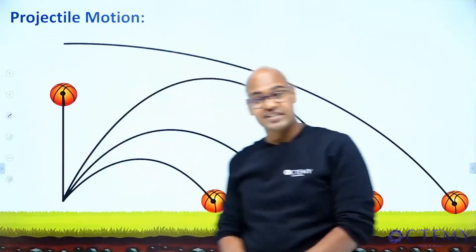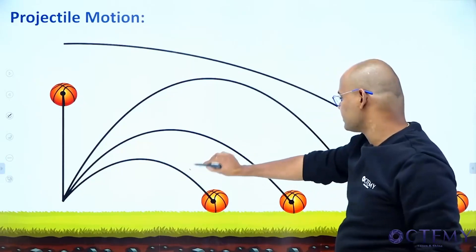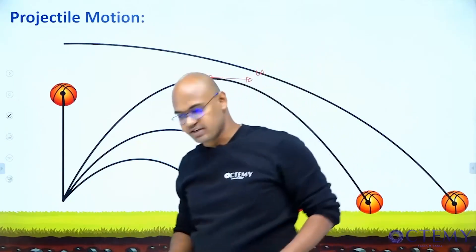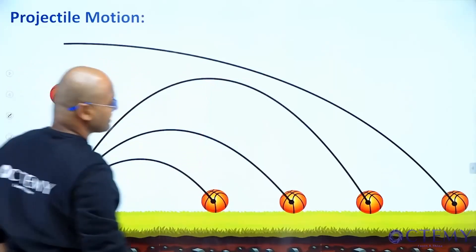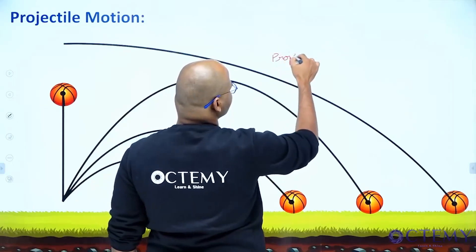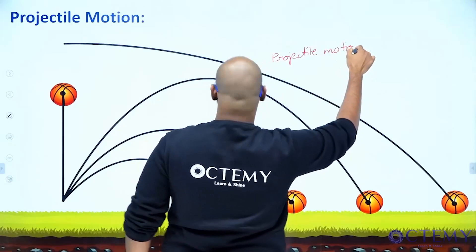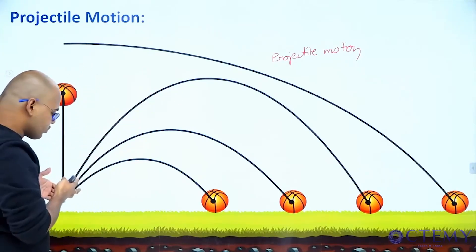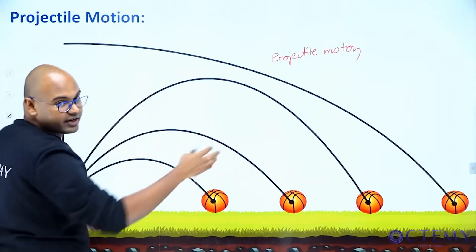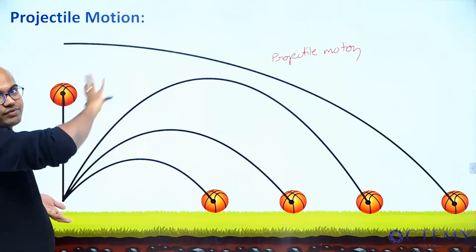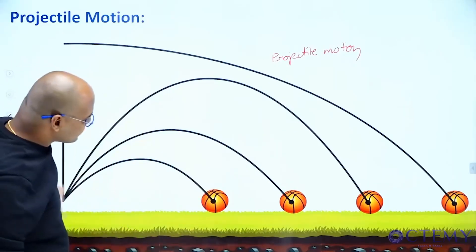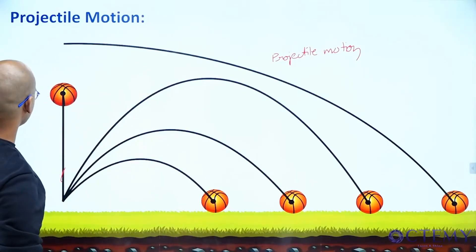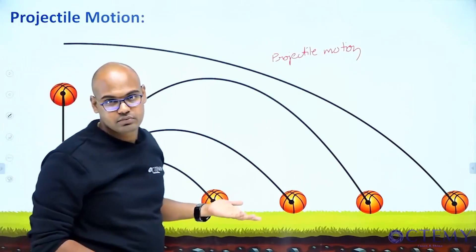If I project with some angle, or project it horizontally from some height, all these motions are what we call projectiles. A missile is projected, a rocket is launched, you give a football a kick and it is projected, something is fired from a cannon — all follow projectile motion. The path traced is called a projectile. My target is to analyze this motion. Since it moves in both x and y directions, it is definitely 2D motion.